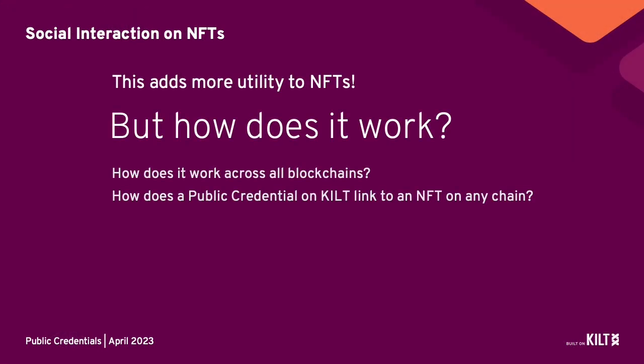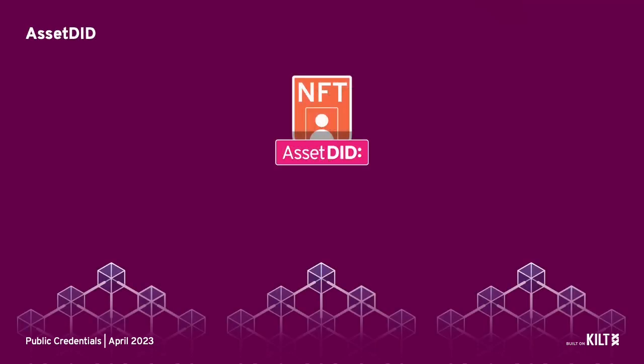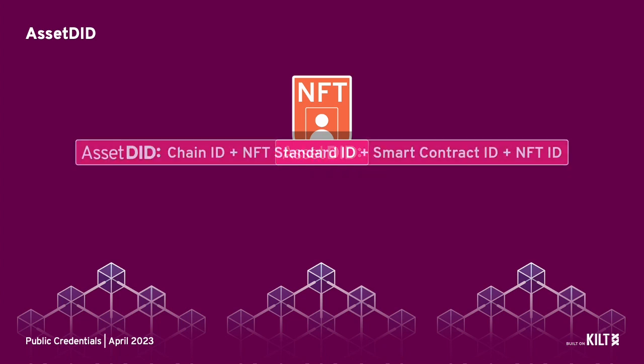This adds more utility to NFTs. But how does it work across all blockchains, and how does a public credential on KILT link to an NFT on any chain? In short, thanks to asset DIDs. Every existing or future NFT automatically has an asset DID, no matter which blockchain the smart contract is on.